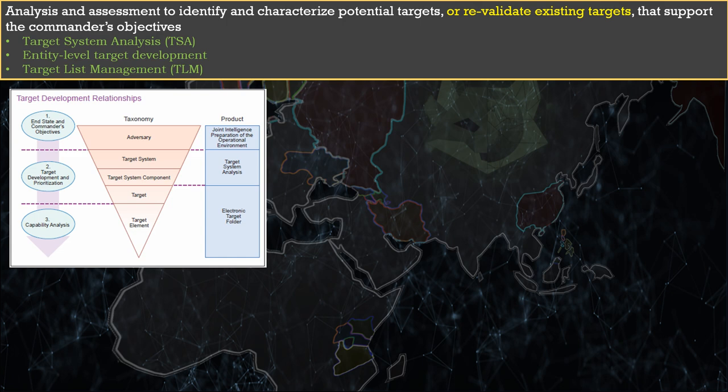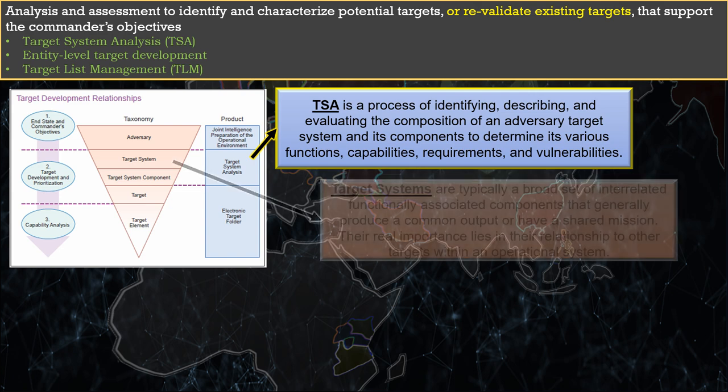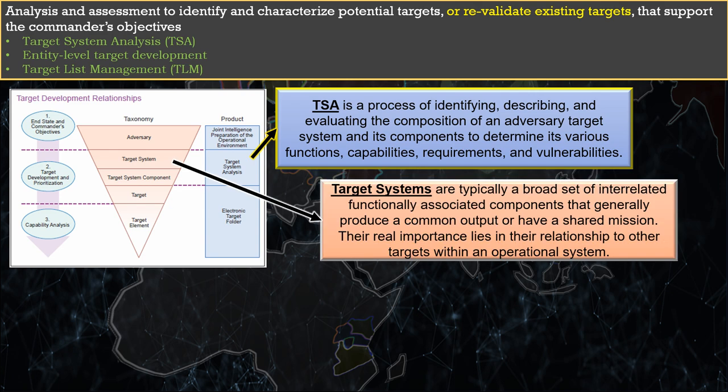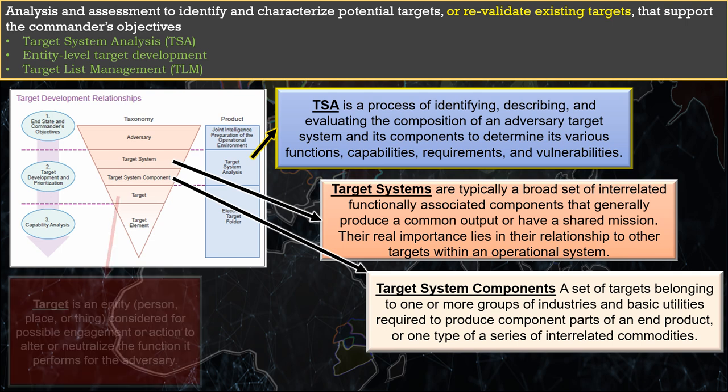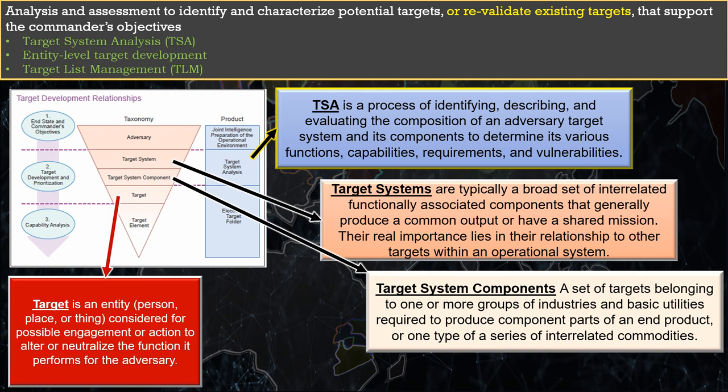TSAs are composed of identifying the target systems and target system components. Systems are typically a broad set of interrelated, functionally associated components that generally produce a common output or have a shared mission. Their real importance lies in their relationship to other targets within an operational system. System components are typically a set of targets belonging to one or more groups of industries and basic utilities required to produce component parts of an end product, or one type of a series of interrelated commodities. Once you have these identified and their links or interconnections outlined, you've completed your target system analysis. And once you've completed your TSA, you can identify actual targets — defined as an entity, person, place, or thing, considered for possible engagement or action to alter or neutralize the function it performs for the adversary.